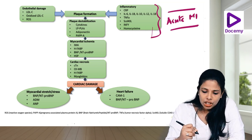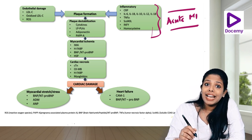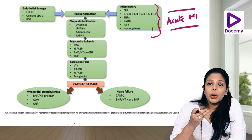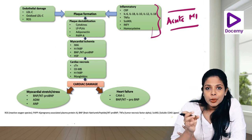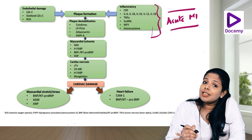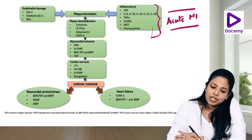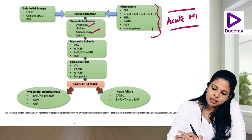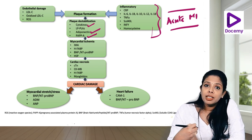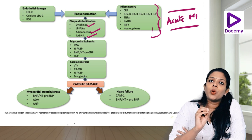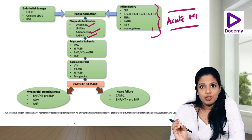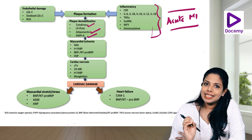Coming to plaque formation: once the plaque forms and destabilizes, you will get associated thrombosis and there may be embolism. Whenever there is plaque destabilization, there is release of cytokines, adiponectins, and pregnancy-associated protein A. After the plaque destabilizes, there is going to be embolism or occlusion of the coronary arteries, which can lead to myocardial ischemia.